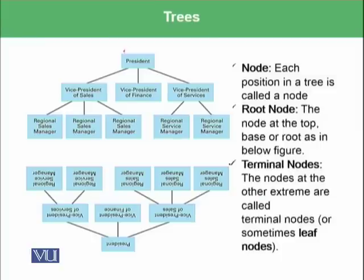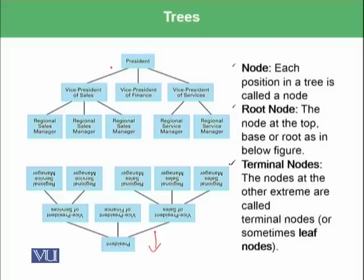All of the rectangular shapes in this picture are nodes — president, vice president of sales, vice president of finance, vice president of services, and so on. The root node is the node at the top. In real life, trees have their base in the ground, so we have reversed this picture — the president is now at the top and all its children go upward.